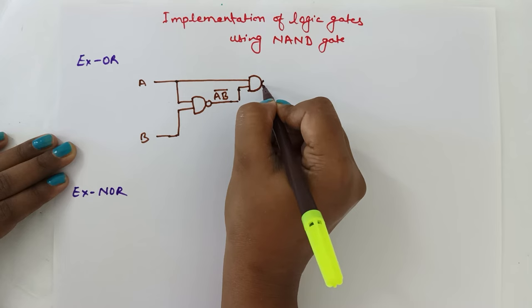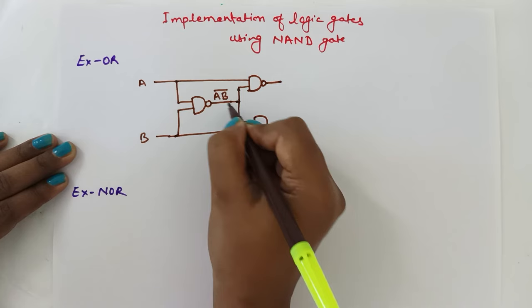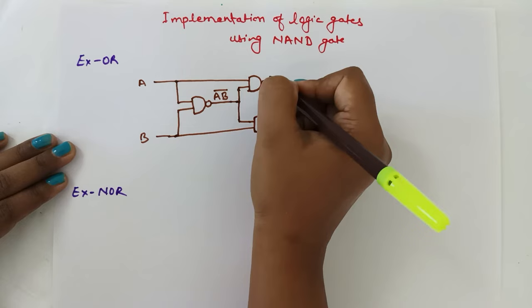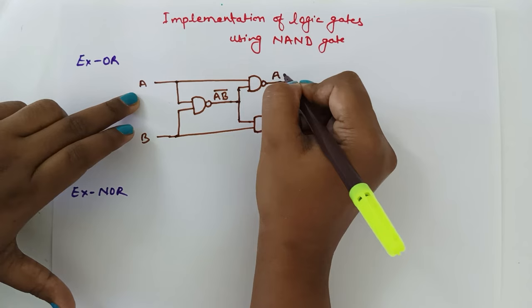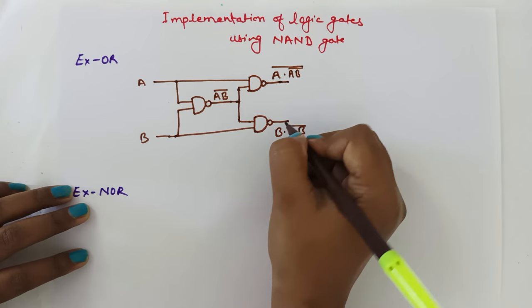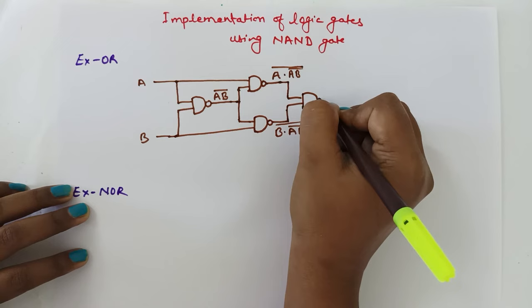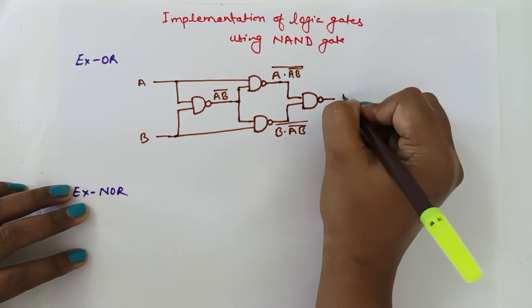This AB bar output is combined with input A and given to a second NAND gate, and input B is combined with AB bar and given to a third NAND gate. So the output of the second gate is A dot AB bar whole bar, and the output of the third gate is B dot AB bar whole bar. These two outputs are then given as inputs to a fourth NAND gate, giving A XOR B.